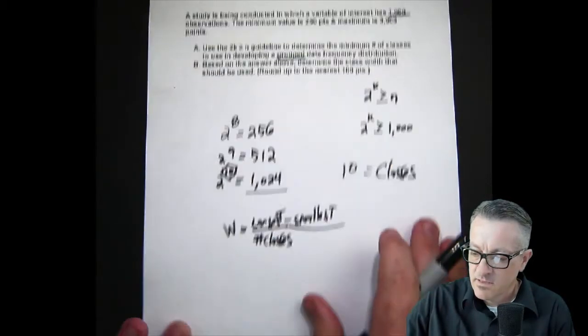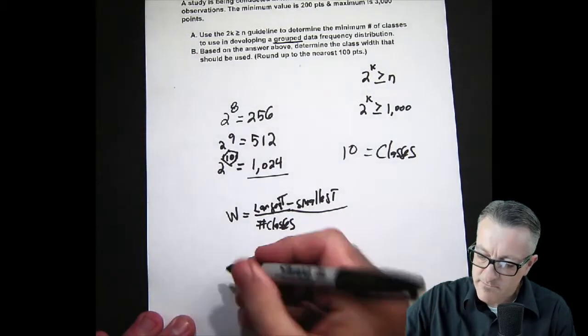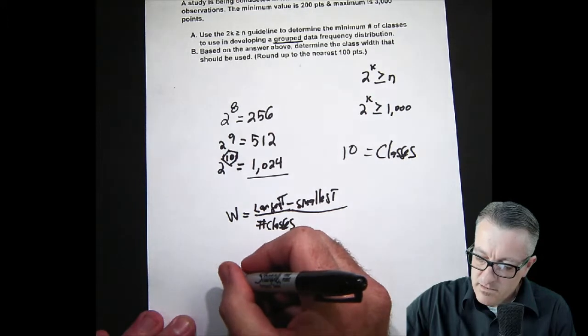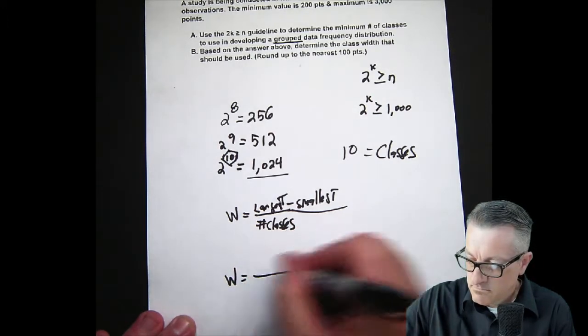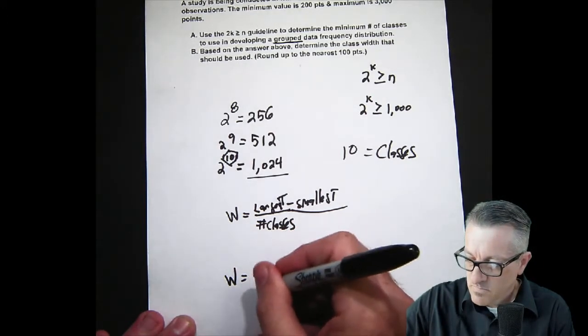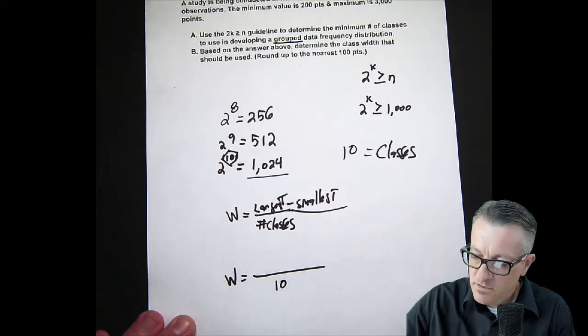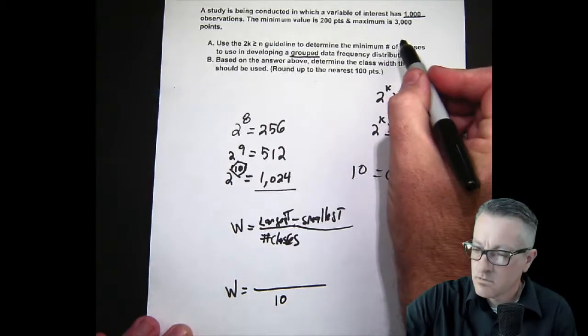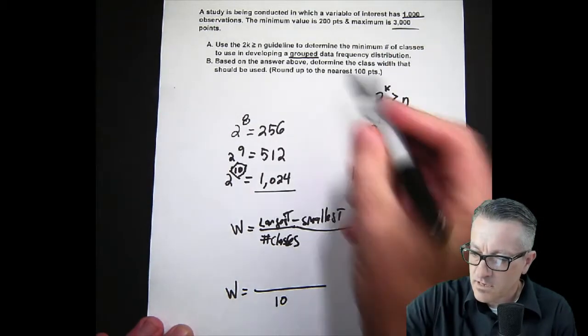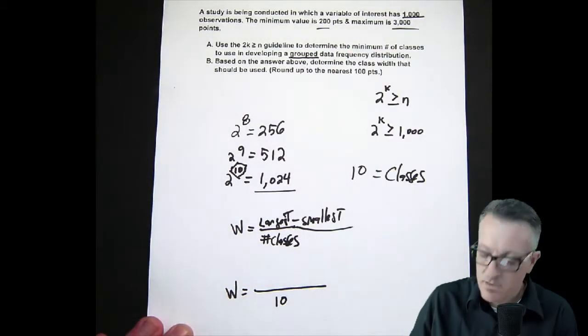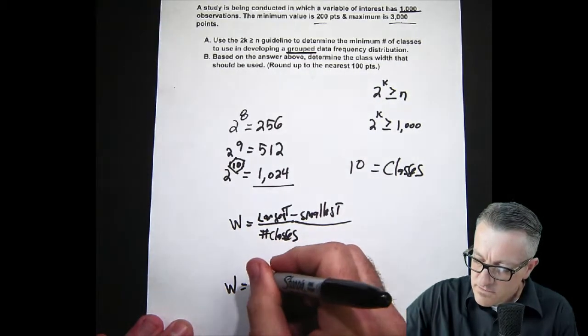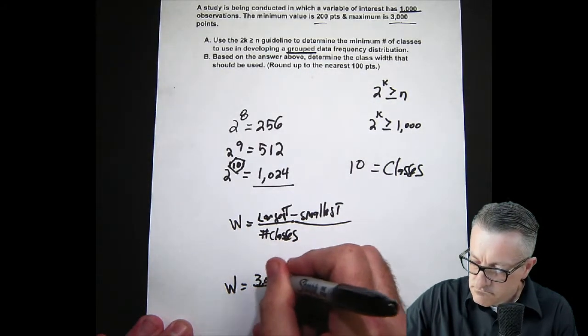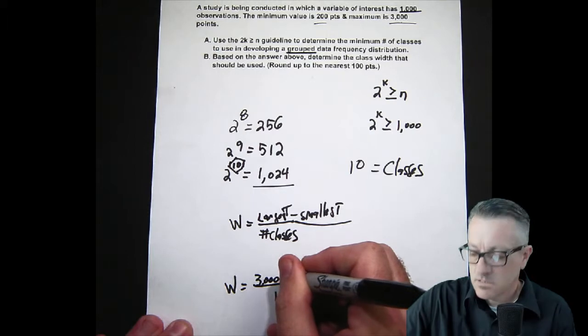So we have a little bit of this data, don't we? So it's like this: we have 10 classes that we've determined, and for our largest data it is 3000 and our smallest is 200. So we do 3000 and subtract 200, which equals 2800.